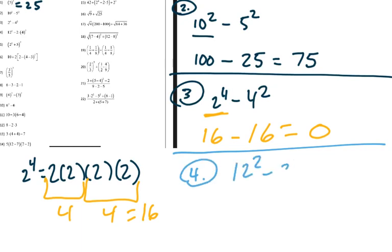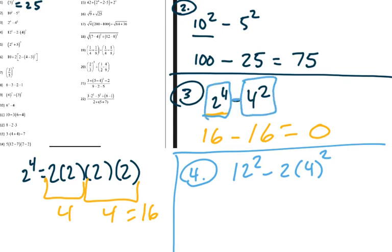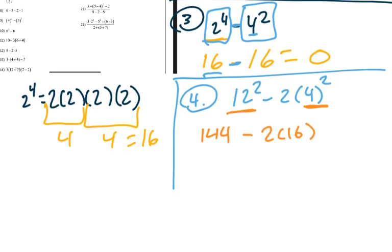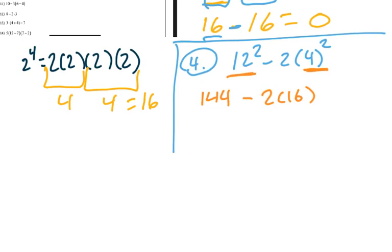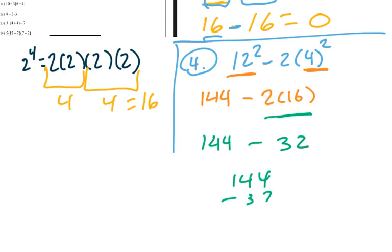Number four is 2 squared minus 2 times 4 squared. Following PEMDAS: exponents first, so we do 4 squared, which is 16. Then multiplication before subtraction: 2 times 16 is 32. Now we need the other exponent — wait, looking at this more carefully, exponents give us 144 minus 2 times 16. So 2 times 16 is 32. Then 144 minus 32: 4 minus 2 is 2, 4 minus 3 is 1, giving us 112.